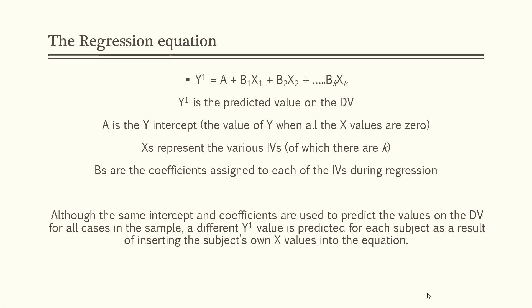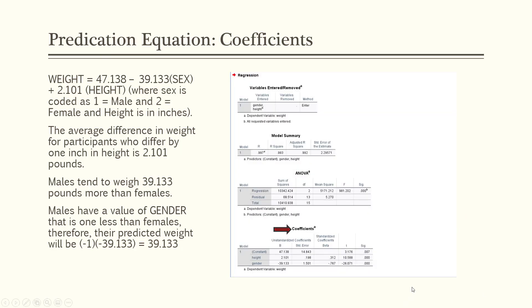The regression equation now includes multiple independent variables. Using the coefficients, we have: weight-prime equals 47.138 (the constant) minus 39.133 times gender plus 2.101 times height. This is the basic equation: weight minus gender plus height. We've coded gender as male equals 1 and female equals 2, and those numbers become meaningful in this equation because they're categorized as 1 and 2.